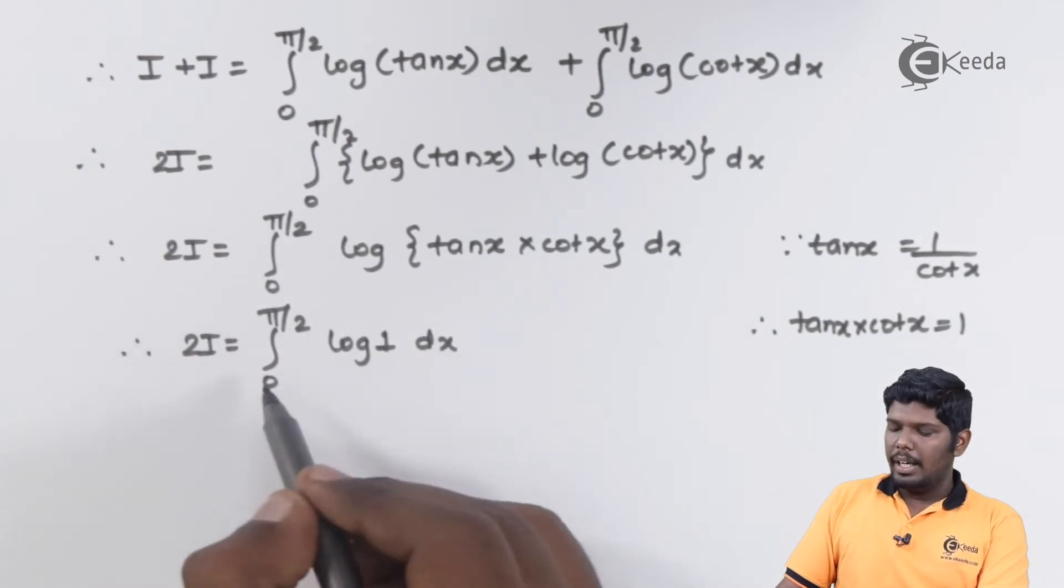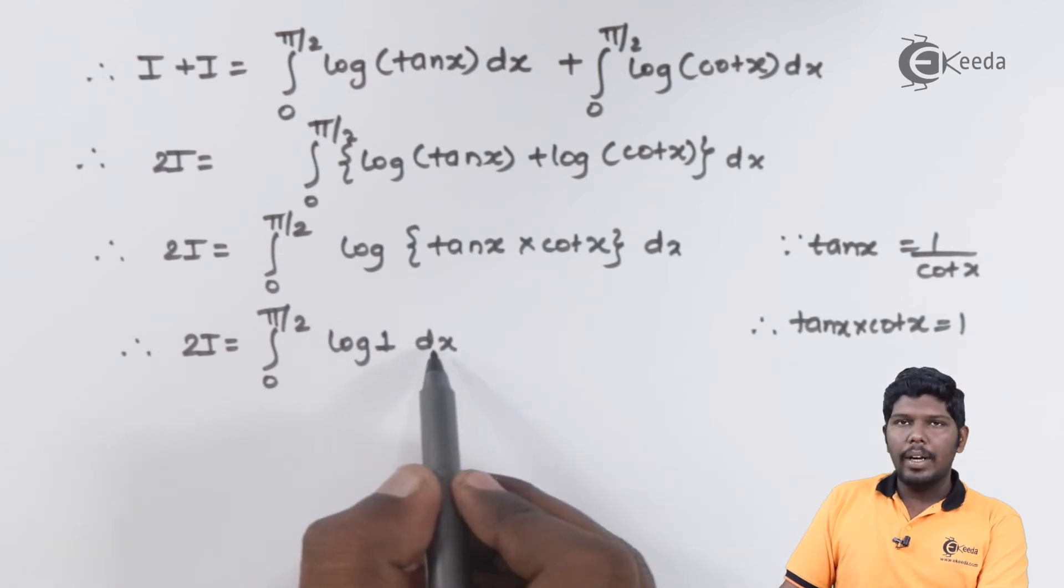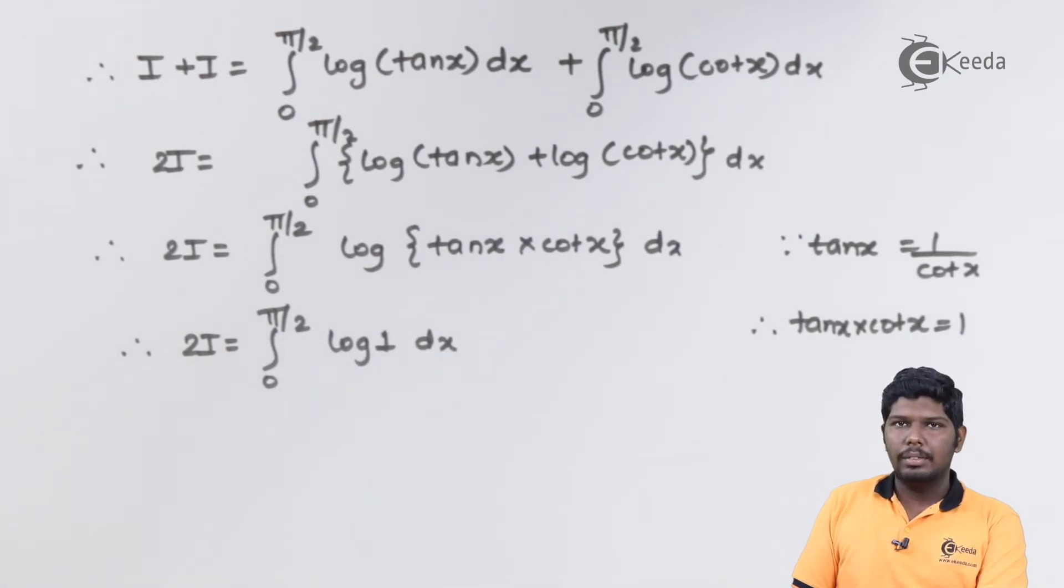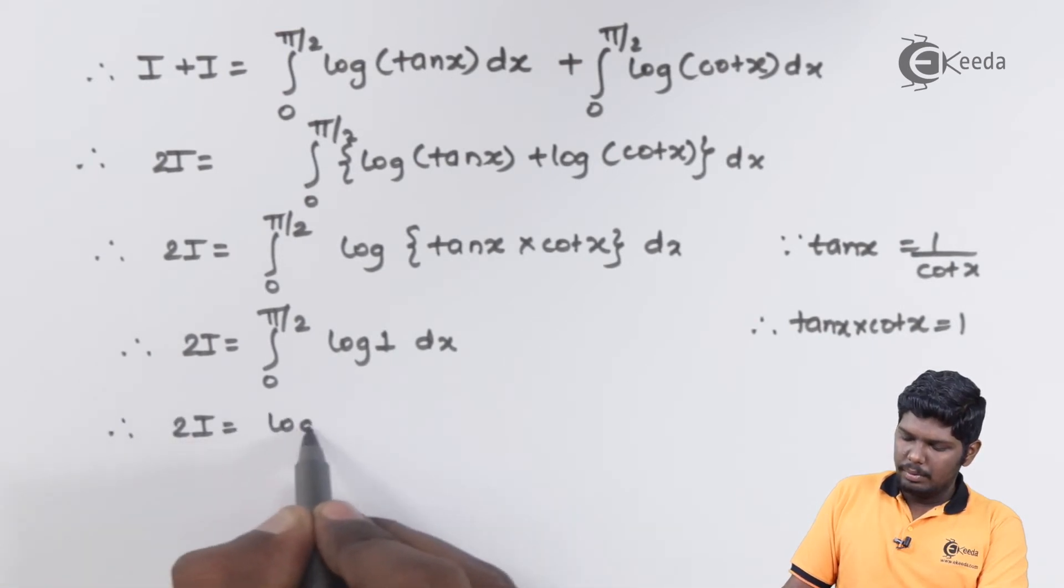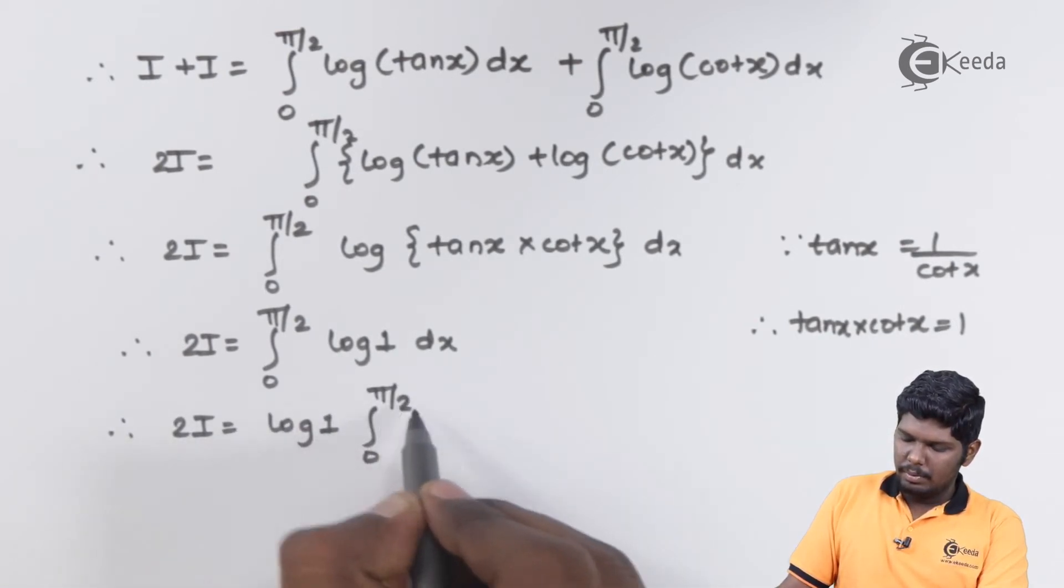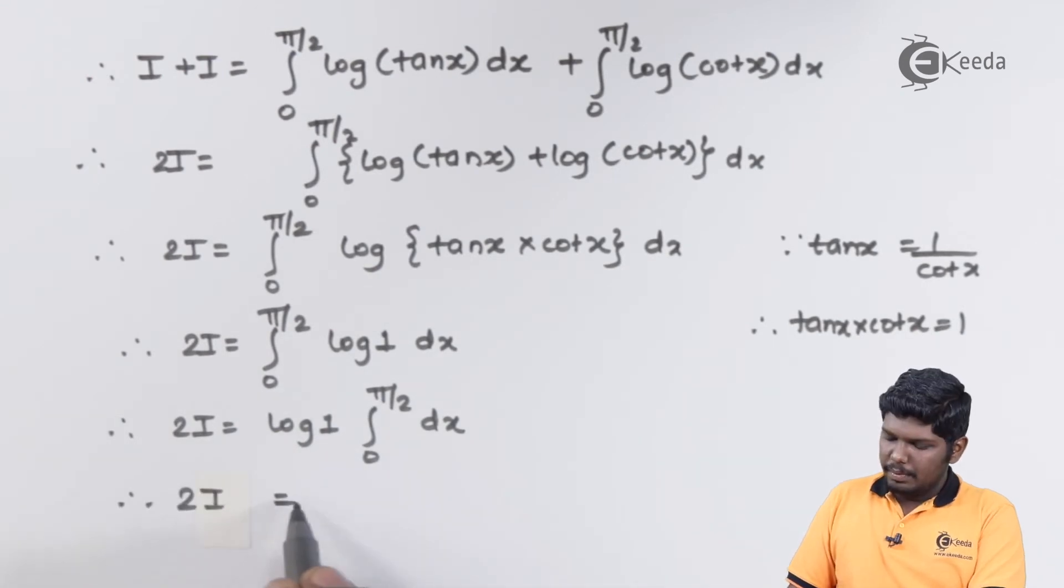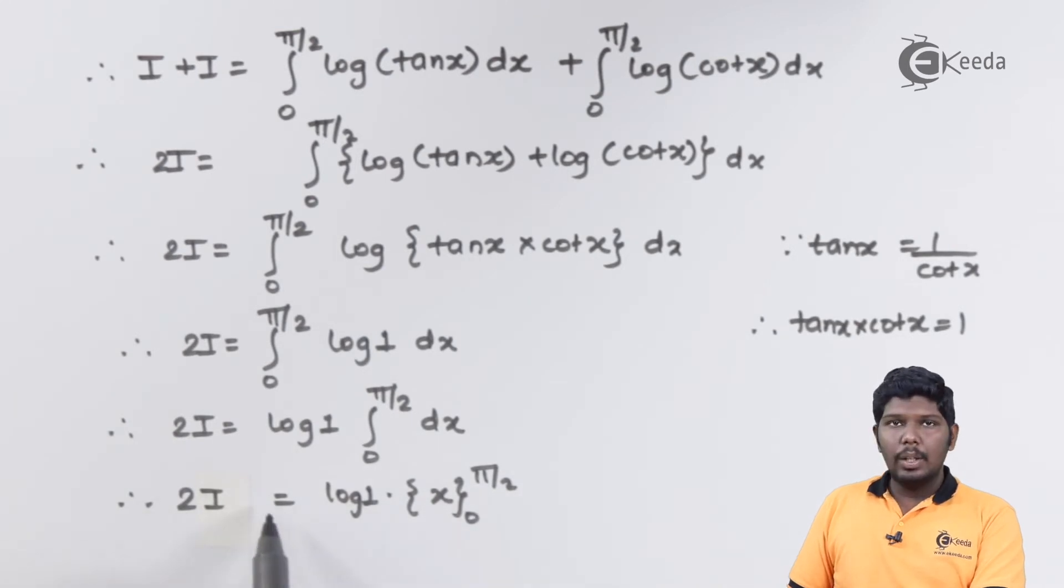So we have integral 0 to pi by 2 log 1 dx. Now we can take this log 1 outside the integral. Integration of dx is x. Therefore we have 2i is equal to log 1 into x within limits 0 to pi by 2.